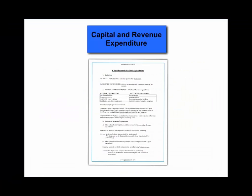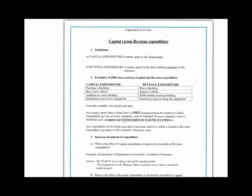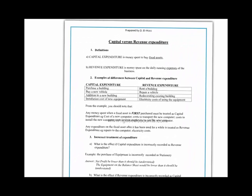Hello, my name is Dean Elhos and today I will be explaining the difference between capital and revenue expenditure. Capital expenditure is the money that we spend on buying the fixed assets in a company, whereas revenue expenditure is the money that we spend on a day-to-day basis running the firm.